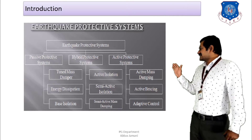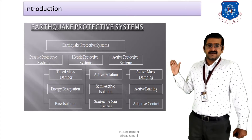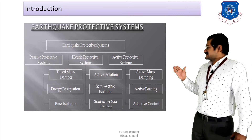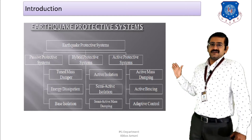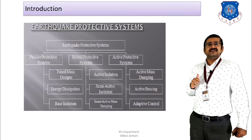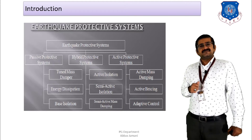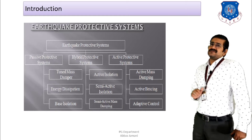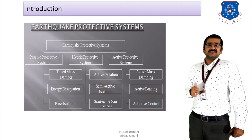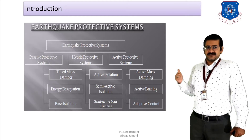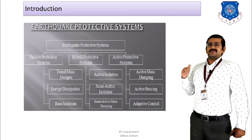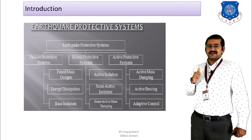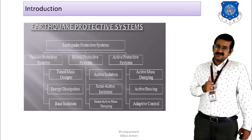In the hybrid system, three cases are there: first is active isolation, second is semi-active isolation, and third is semi-active mass damping. In the active protective systems, three categories are mentioned: active mass damping, active bracing, and adaptive controls. Out of these nine different categories, tuned mass damping is one familiar system, and from here we move to the discussion of dampers — covering different types, building behavior under lateral loads, and the function of dampers.